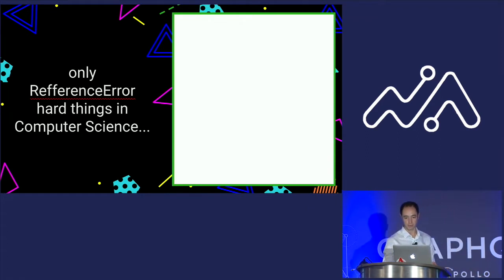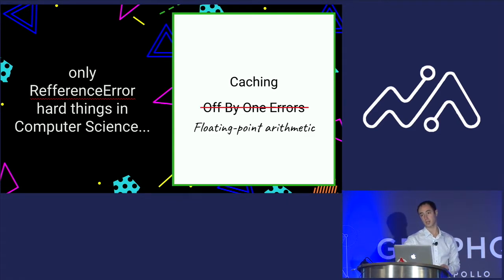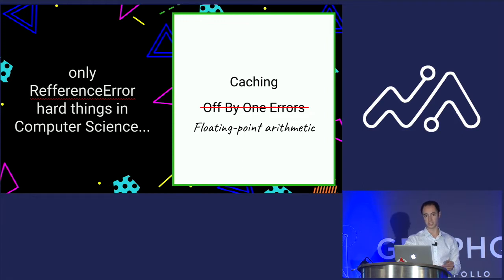I'm sure at least a few of you have heard about the three hardest things in computer science: caching and off-by-one errors, or if you are working in JavaScript, that's caching and floating-point arithmetic. Today I do not want to talk about floating-point arithmetic. Today I want to talk about caching, and specifically HTTP caching as it relates to GraphQL. I want to start off by talking about HTTP caching in general, and I'm going to loop back to the GraphQL part in just a little bit.